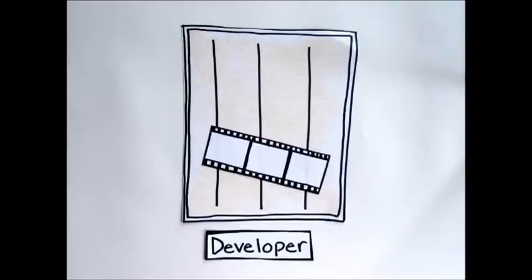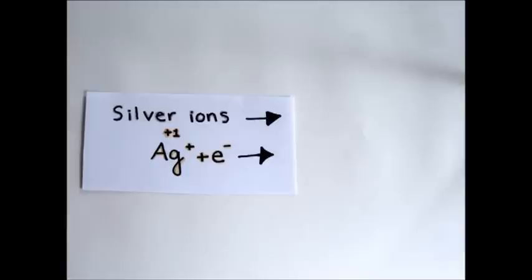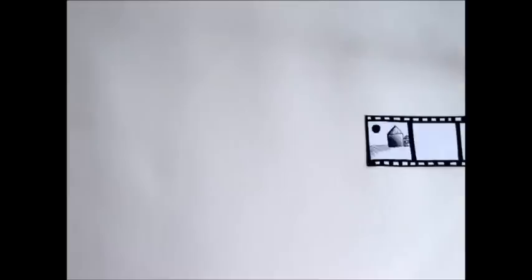In the first step of processing, the film is placed in a solution known as the developer. In the developer, or the reducing agent, millions of exposed crystals are converted from silver ions to silver metal. This transforms the latent image to metallic silver, creating the visible photographic image.